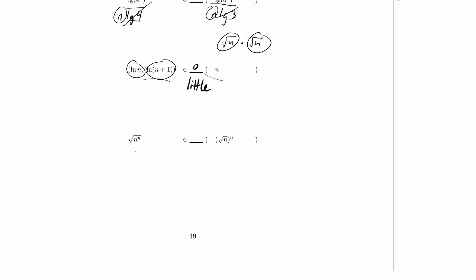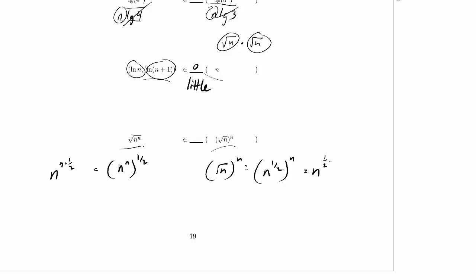And this last one: the square root of n to the n versus n to the square root of n. Let's write these out. The square root of n to the n is n to the n to the one-half, and n to the square root of n is n to the one-half to the n. The first equals n to the n times one-half, and the second equals n to the one-half times n. Those are the same thing, so these are theta of each other — they're actually identical.